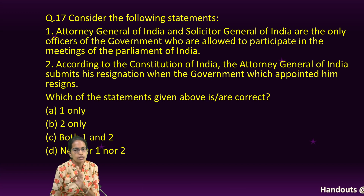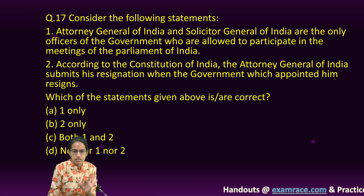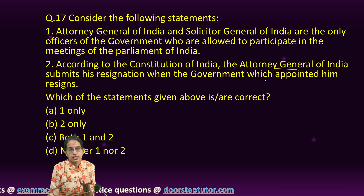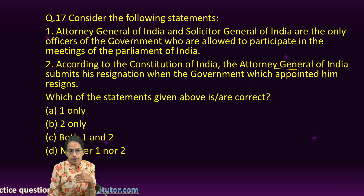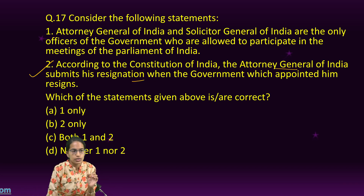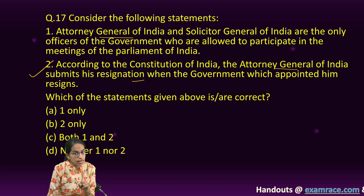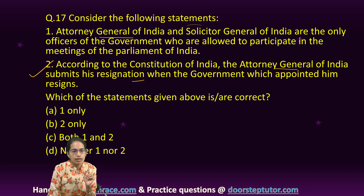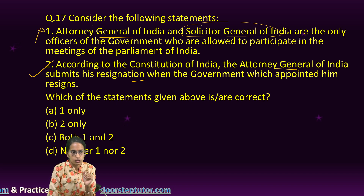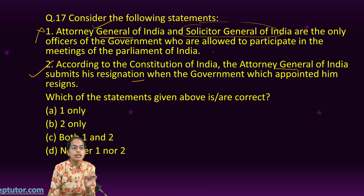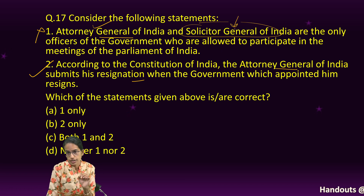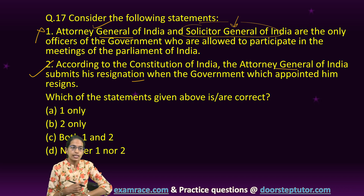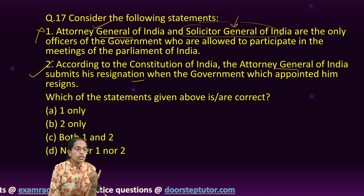The next question is about the Attorney General. Under the Constitution of India, if the Council of Ministers dissolves, the Attorney General would have to submit resignation as the government resigns — so statement two is correct. However, the Attorney General of India is allowed to participate in all meetings of Parliament, even though he is a member of neither house. The same does not apply to the Solicitor General, so statement one is incorrect. The Solicitor General is not under Article 76 of the Constitution but under a statutory provision. B only is the right option.